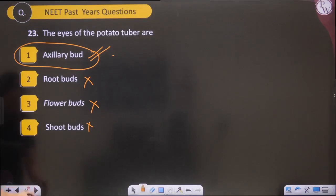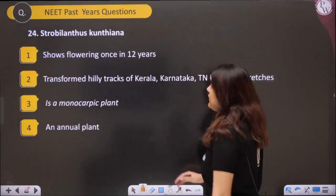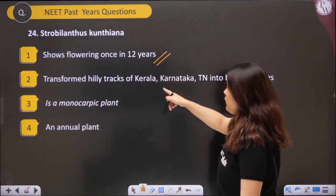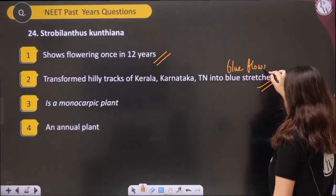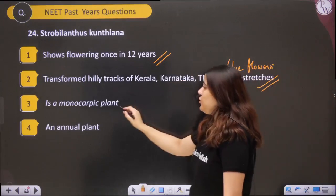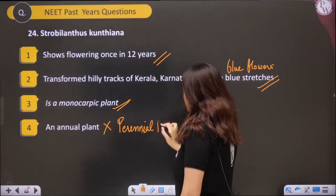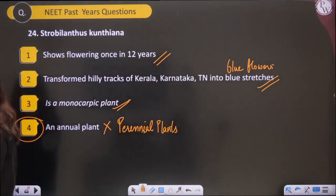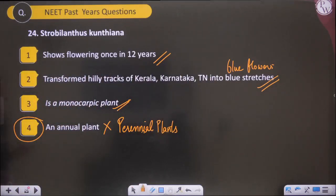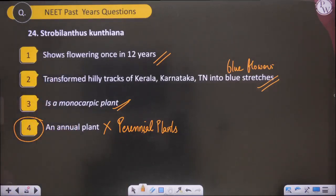Strobilanthus kunthiana, also known as Neela Kurinji, shows flowering once in 12 years and transforms hilly tracks of Kerala, Karnataka, and Tamil Nadu into blue stretches because of its blue flowers. It is a monocarpic plant — not annual. It is perennial because it lives for 12 years. Monocarpic means it flowers once in its lifetime; perennial means it lives for many years.